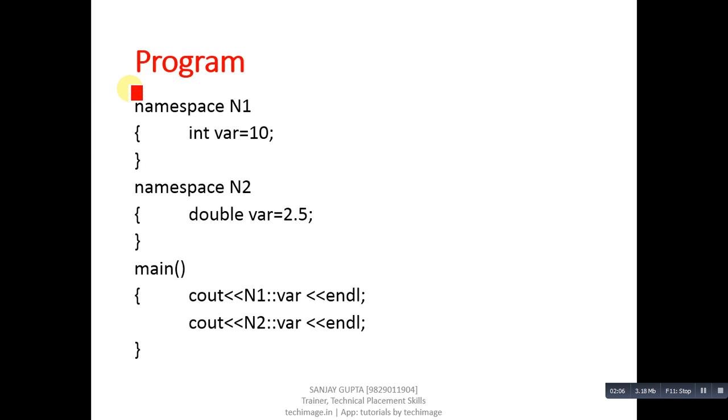This is a program based on namespace. In this program, there are two namespaces: namespace N1 and namespace N2. N1 and N2 are both identifiers or names of namespaces. N1 contains a variable var equals 10, and N2 contains a variable var equals 2.5. In N1 namespace, var is of int type. In N2 namespace, var is of double data type. In the same program, we can have two variables of the same name but in multiple namespaces. We can also define or implement classes in place of these variables.